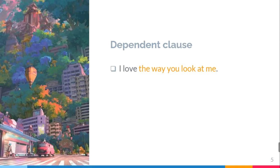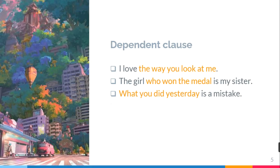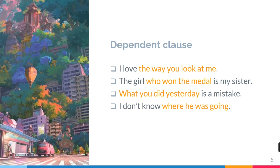Here are the examples of dependent clause. These are actually developments of the previous independent clause examples. The word 'you' in 'I love you' is developed into another clause, and it becomes 'I love the way you look at me.' So here there are two clauses in this sentence — the first one is 'I love.'